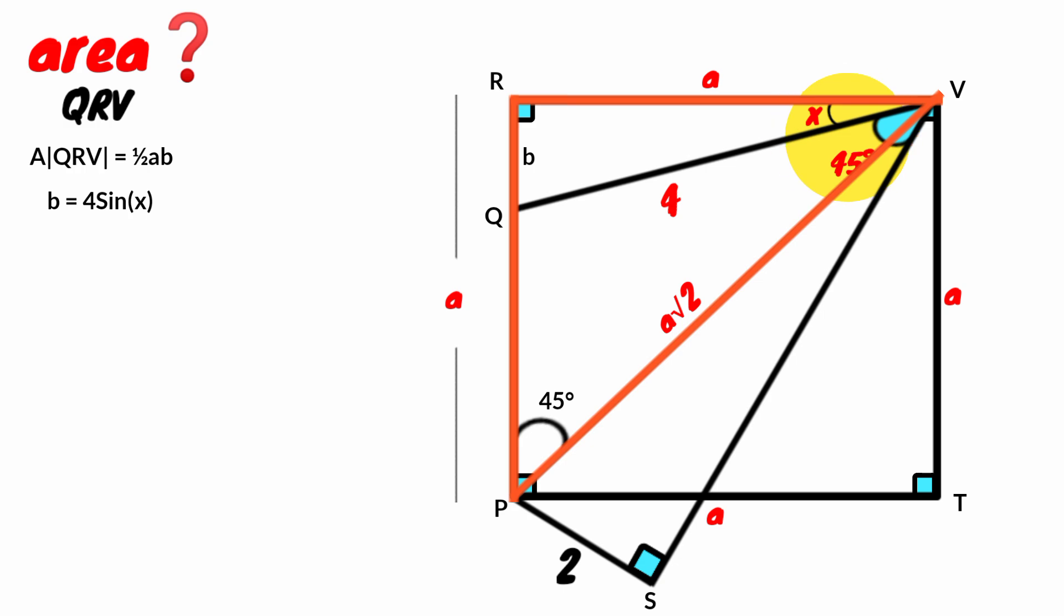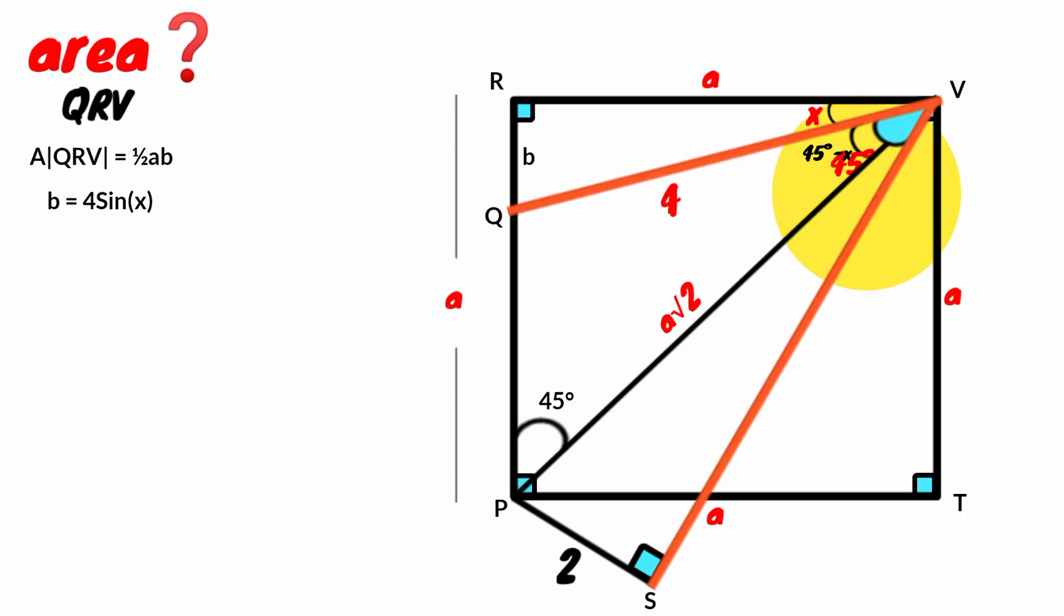But here, this part is X. Therefore, this must be 45 degrees minus X. But recall, this whole angle QVS is 45 degrees.